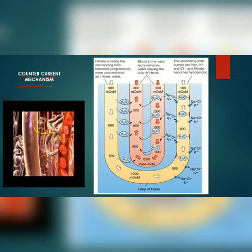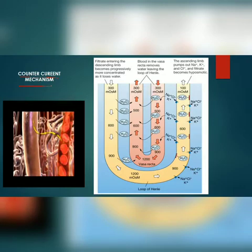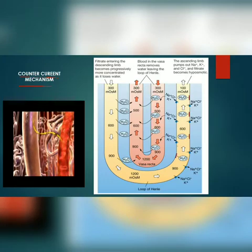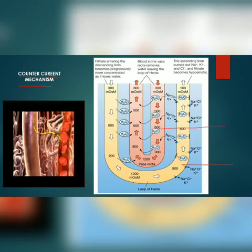Mammals have the ability to produce concentrated urine and the capability of concentrating the urine is largely related to the length of the loop of Henle. The Vasa recta also helps in concentrating the urine. Both the loop of Henle and the Vasa recta help in concentrating the urine.